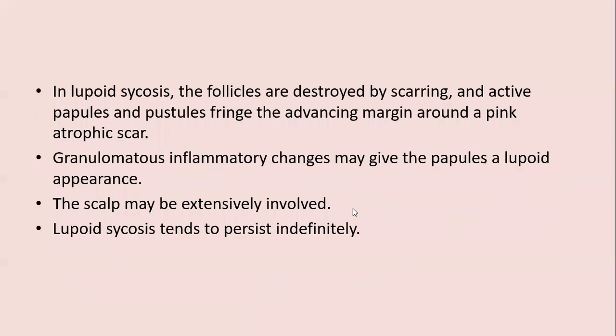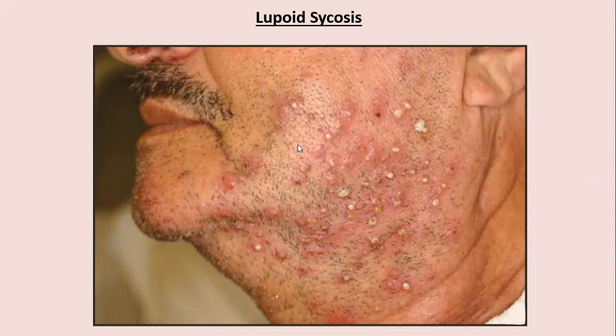In lupoid sycosis, follicles are destroyed by scarring, and active papules and pustules fringe the advancing margin along a pink atrophic scar. The granulomatous inflammatory changes may give the papules a lupoid appearance. The scalp may be extensively involved and lupoid sycosis tends to persist indefinitely, showing scarring along with chronic pustules.